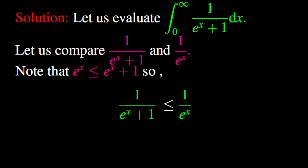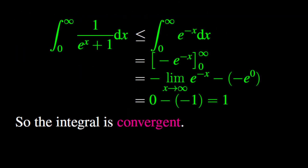Consequently, this implies that the fraction 1 over exponential of x plus 1 is less than the fraction 1 over exponential of x. Therefore, the integral from 0 to infinity of the fraction 1 over exponential of x plus 1 dx is less than or equal to the integral from 0 to infinity of exponential of negative x dx.